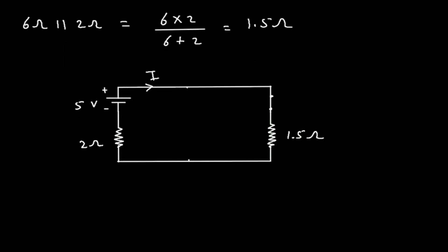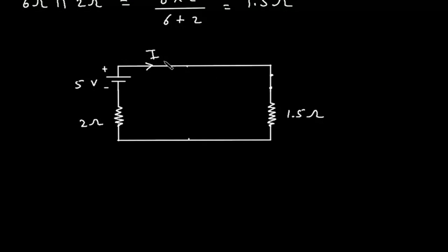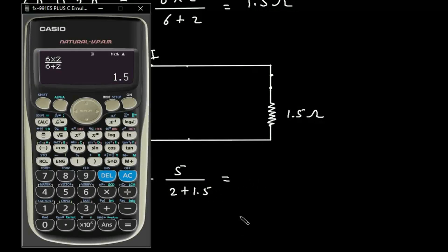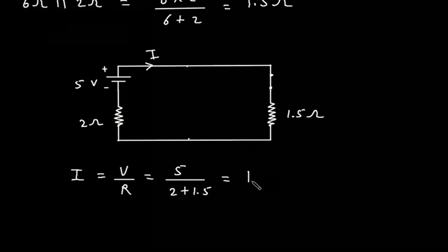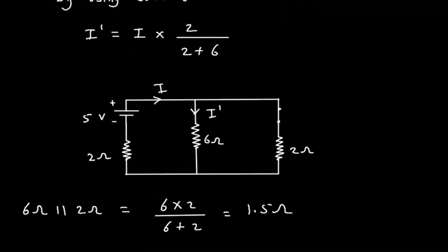Now we can find current I using Ohm's law. I is equal to V divided by R. V is 5 volts, and R is 2 plus 1.5. So this will be 5 divided by 3.5, which is 1.42 amperes.